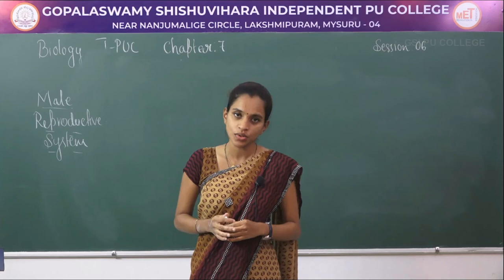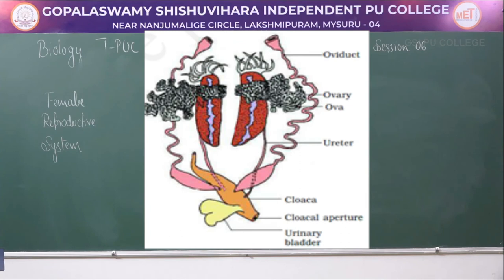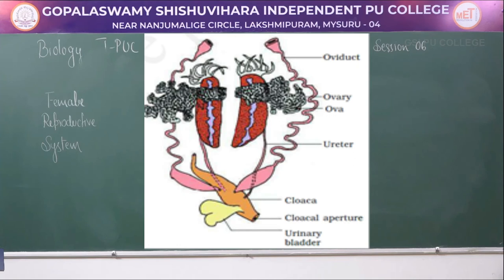The female reproductive system has a pair of ovaries situated near the kidney as independent structures — unlike the male testes which are attached to the kidney. Oviducts arise from the ovary and open into the cloaca separately. In females, ureters pass urine and oviducts pass eggs, but both open into the common cloaca.